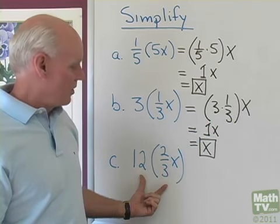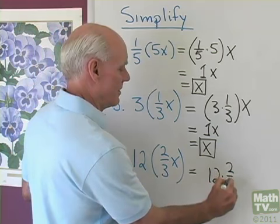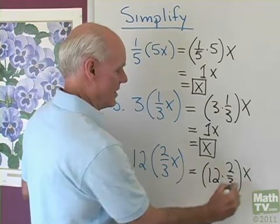Now, next problem, 12 times 2/3x. I'll do the same thing, 12 times 2/3. I'll group those together, times x.